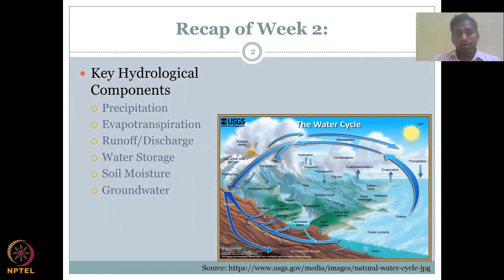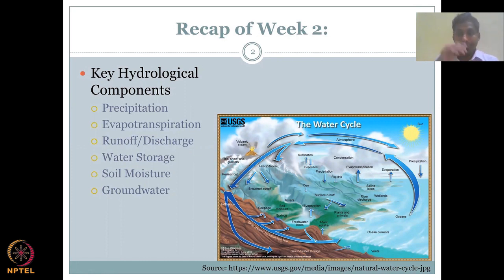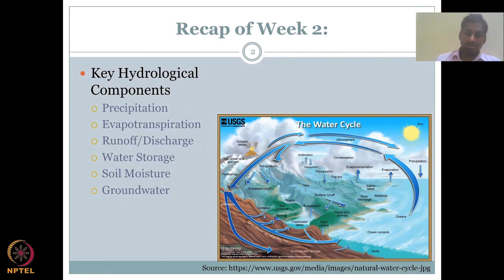In this past week, we looked at how these three hydrological parameters — namely precipitation, evapotranspiration, and runoff — contributed to the water budget or the water cycle equation. We also defined which is a key input to the system, and which of these components is a loss to the system.